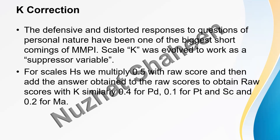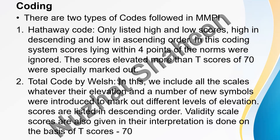For example, in HS, if your total K score is 8 and you multiply by 0.5, the answer is 4. You then add 4 to the HS raw score — so if the raw score was 8, your corrected score becomes 12. That corrected raw score is then used for further processing.